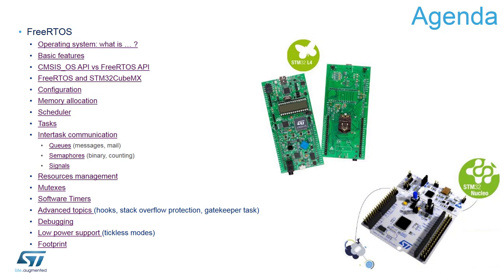We will demonstrate the main debugging components available within two toolchains — IAR and GCC — based on an Atollic Studio example, and we will discuss the low power support implemented within FreeRTOS. At the end, you will see basic information about the footprint of FreeRTOS and its comparison with other operating systems for embedded applications without an MMU.